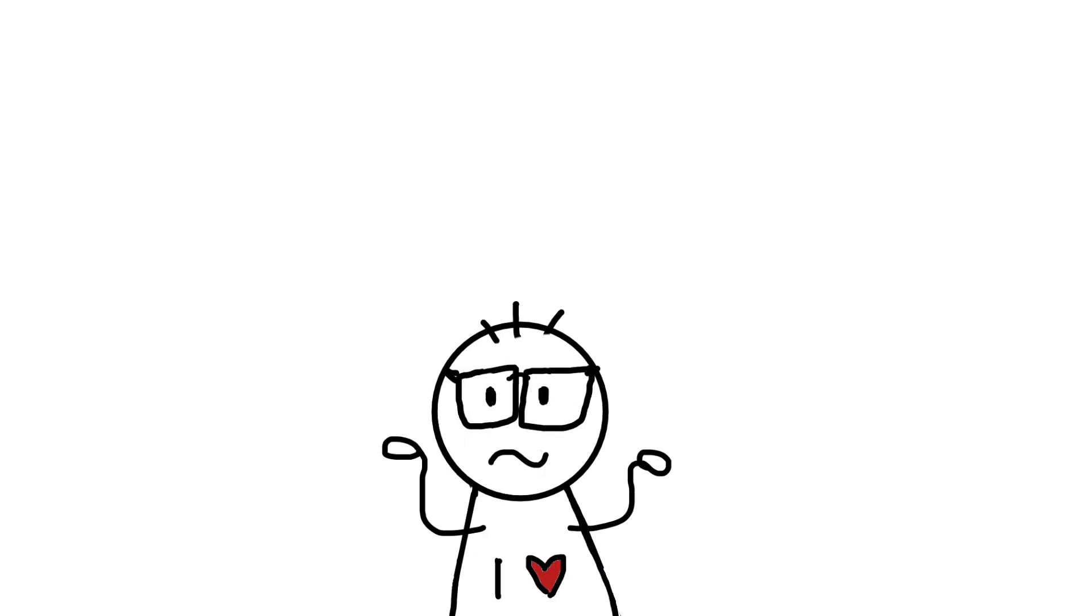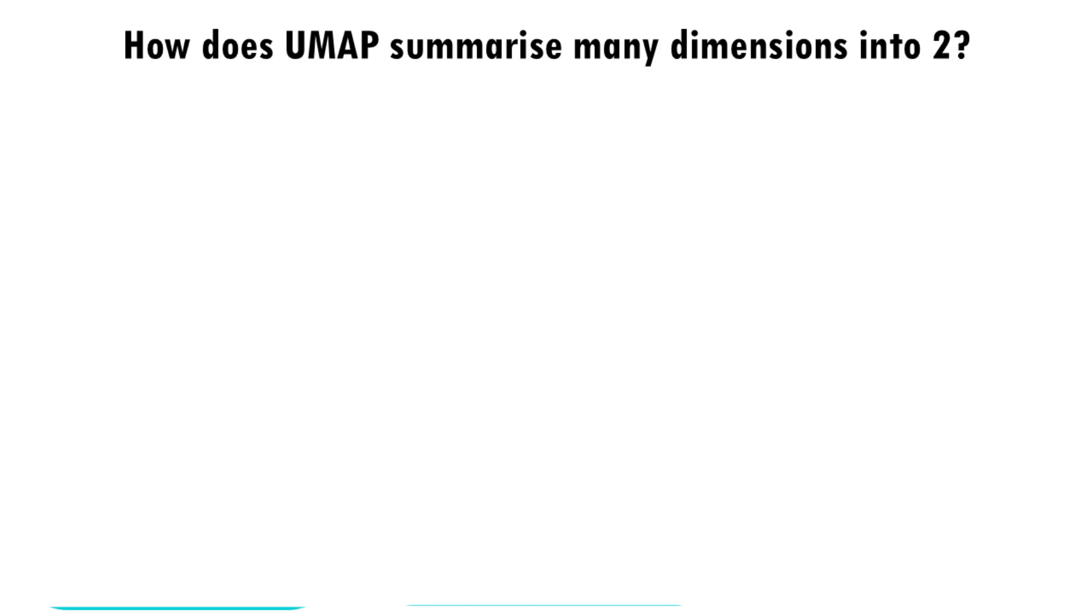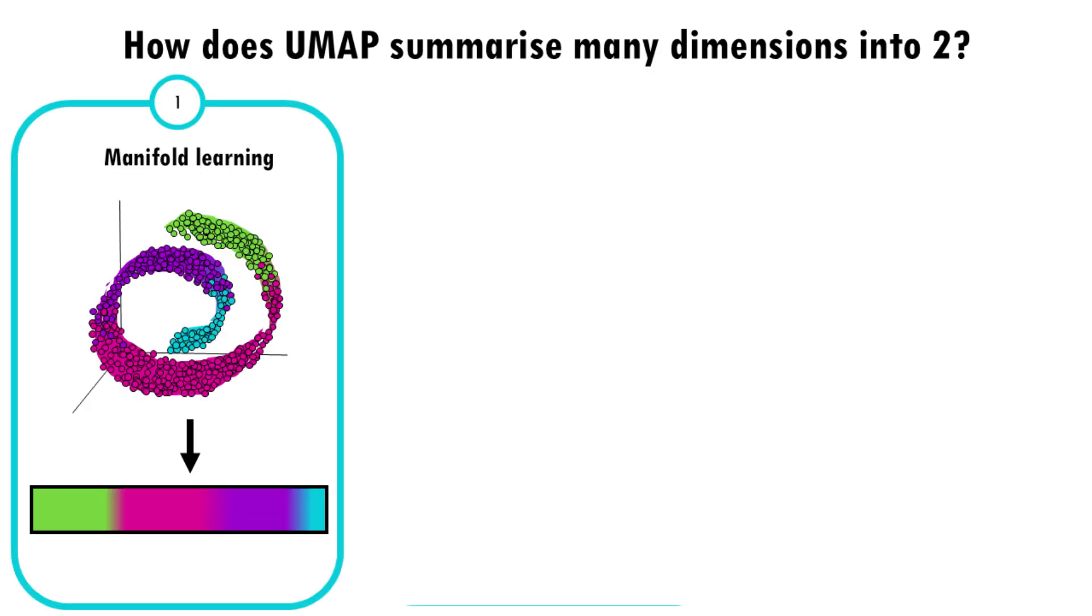So let's dig in a bit into the maths behind UMAP without talking about the maths behind UMAP. So first I'd like to talk about manifold learning. UMAP is based on the idea that high dimensional data often lies on a lower dimensional manifold, which is like a curved surface. For example, a 3D object might look like a 2D surface if we zoom in close enough. UMAP tries to learn this manifold structure, but instead of doing it from three dimensions to two, it does it from 10,000 genes to two UMAP projections. But the idea is the same.